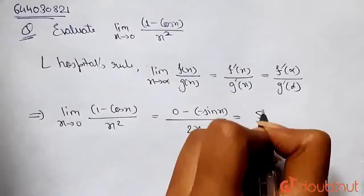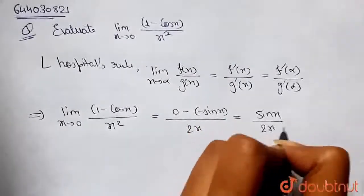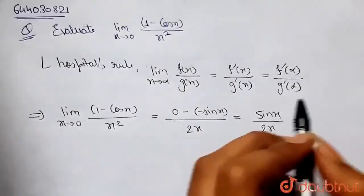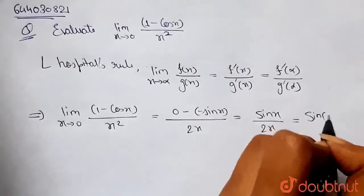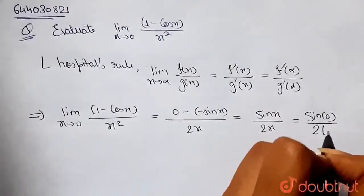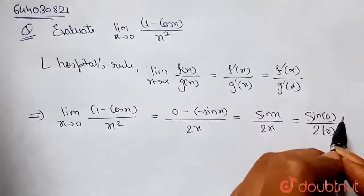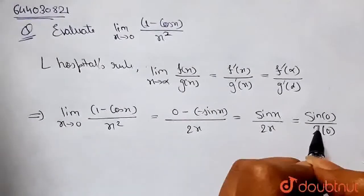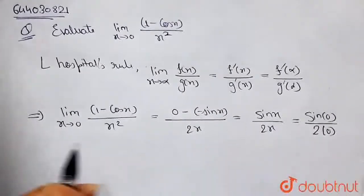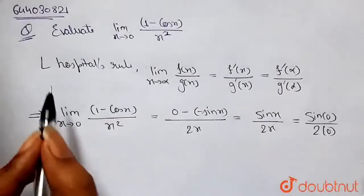So that is equal to sin x divided by 2x. Putting x equal to 0, we will have sin(0), that is 0, divided by 2 times 0, that will be 0. Since this is again of the form 0/0, we have to use L'Hospital's rule again.